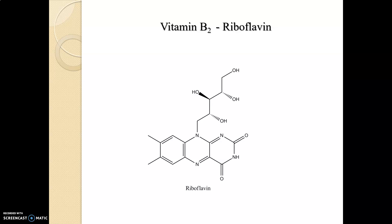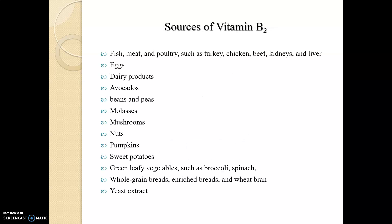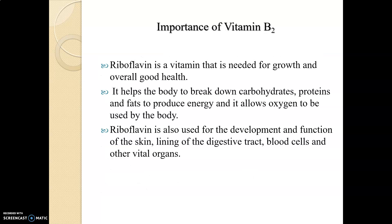The next vitamin is vitamin B2, riboflavin. This is the structure. Sources of vitamin B2 include fish, meat and poultry, eggs, dairy products, avocados, beans and peas, molasses, mushrooms, nuts, pumpkins, sweet potatoes, green leafy vegetables, whole grain breads, enriched breads, wheat bran, and yeast extract.